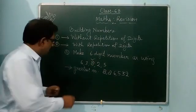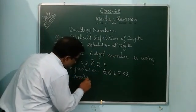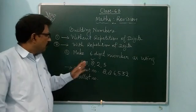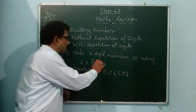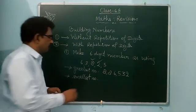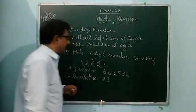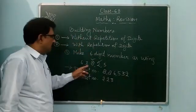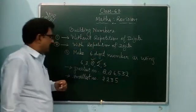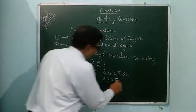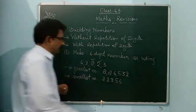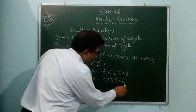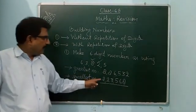Now the smallest 6-digit number. How? You choose the smallest number. The smallest digit is 2. You repeat 2 two times — write 2 and 2. After that just bigger, 3. After that just bigger, 5. After that just bigger, 6. After that the biggest number, 8. So the smallest number is 2,23,568.